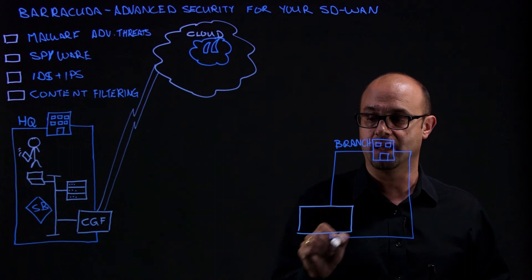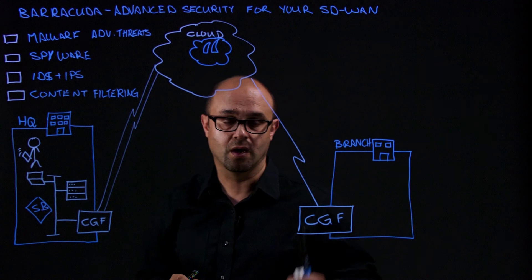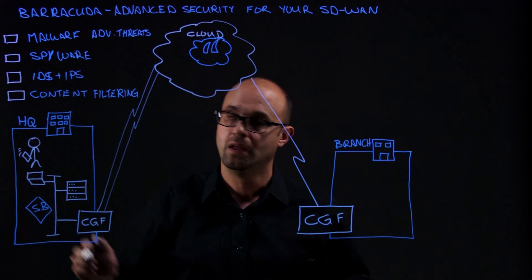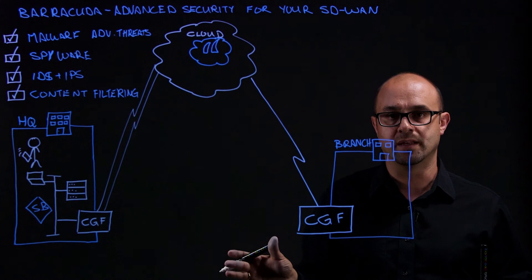So there's good news. Barracuda's cloud generation firewalls have all of that technology built in. So deploying a remote branch office is as simple as deploying a cloud generation firewall. And with the friction-free licensing in which when you buy a license for the firewall, you get all of that functionality built in. And it's all managed centrally. I think you'll agree that's a great security solution.